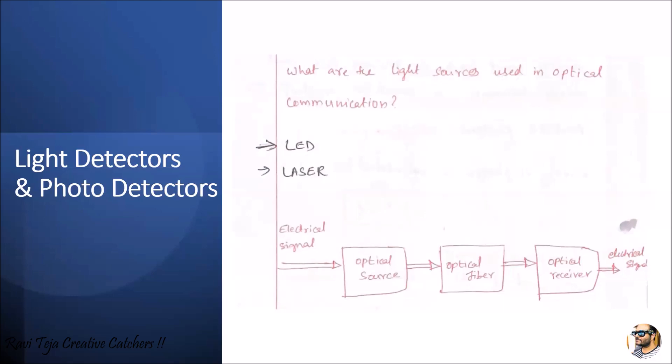Now at this point, at the optical receiver, here comes our topic called light detectors and photo detectors. These detectors receive the light coming through the optical fiber cable, which are incorporated in the optical receivers, and convert it again into electrical signal which is sent for processing.